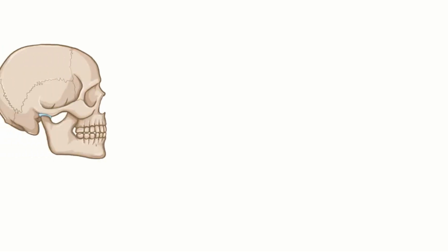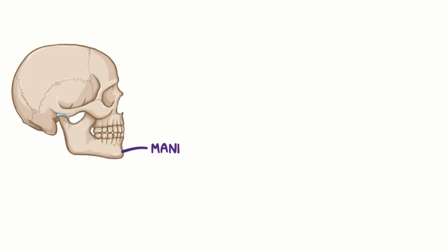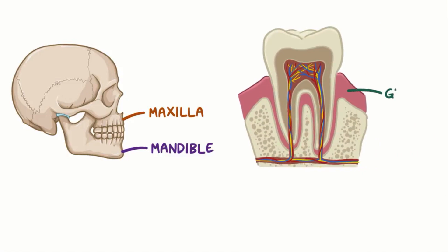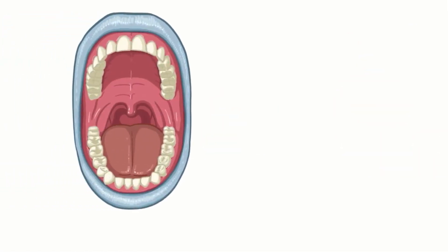The mouth is made up of two key bones: the mandible, which is the bone beneath the bottom row of teeth, and the maxilla, which is the bone above the top row of teeth. The bones are lined by the gums and have an alveolus, or socket, for each tooth. Since the mouth is symmetrically divided down the middle, let's look at one side of a mouth containing the permanent, or adult, teeth.